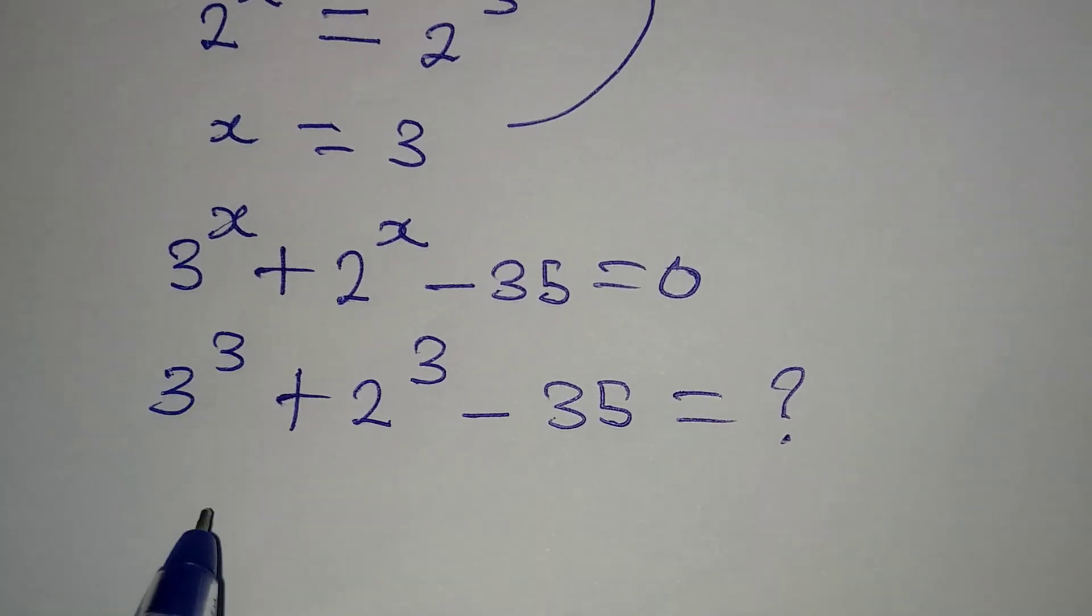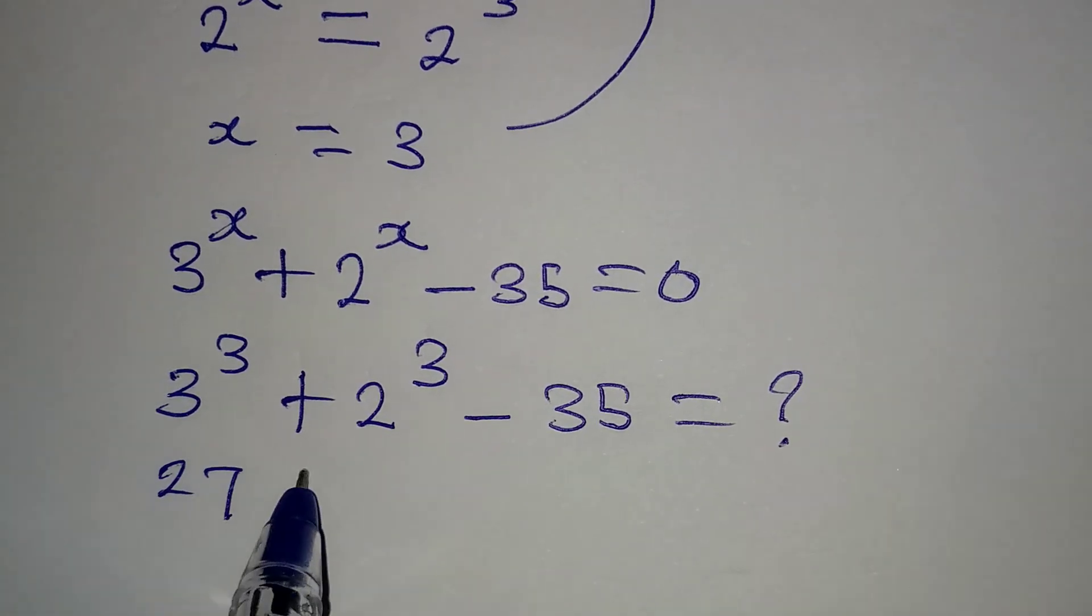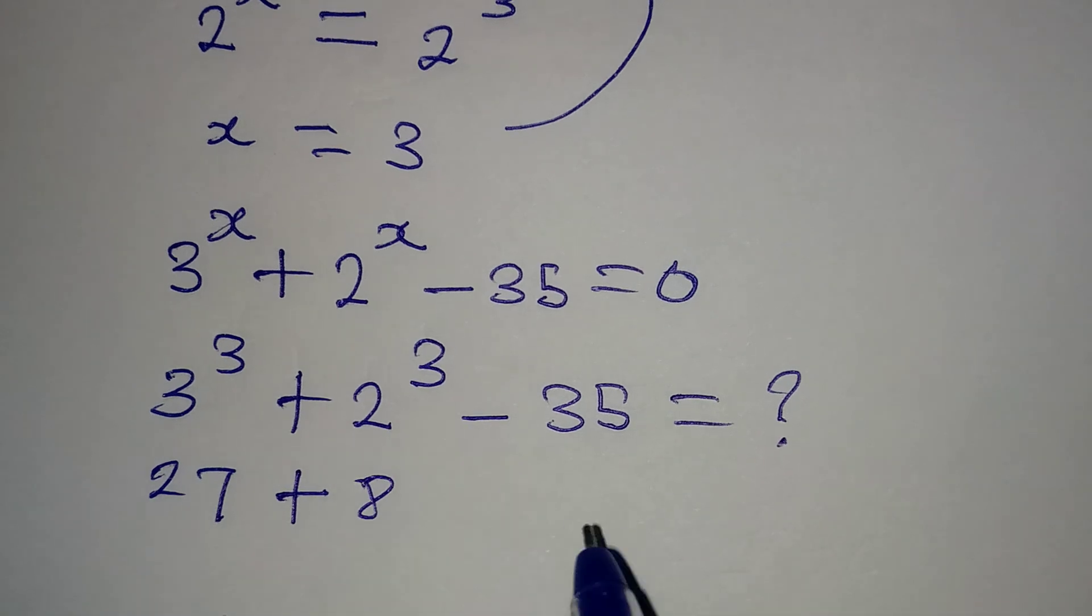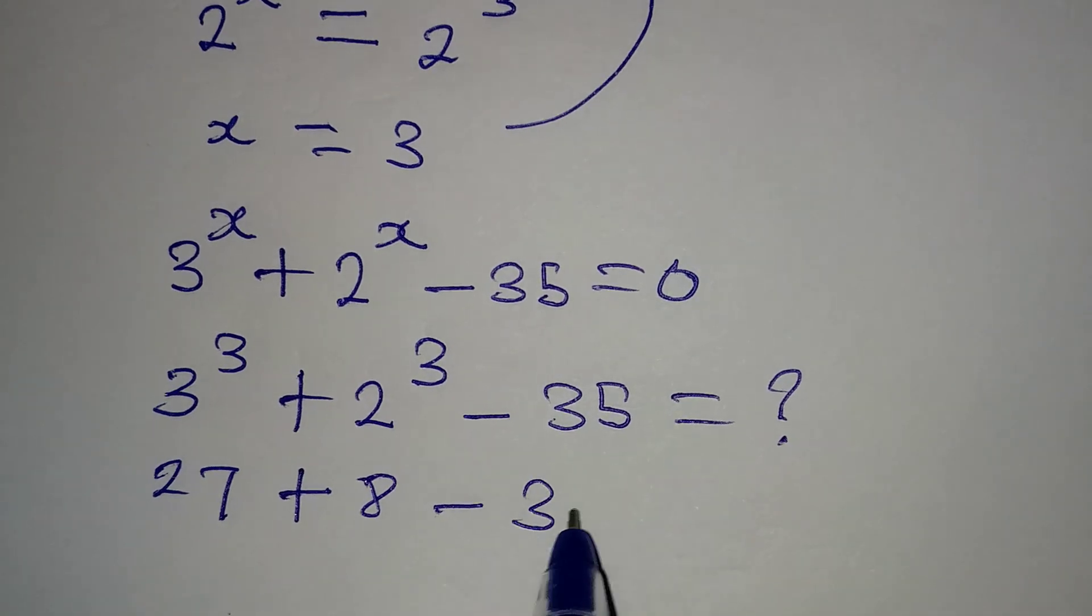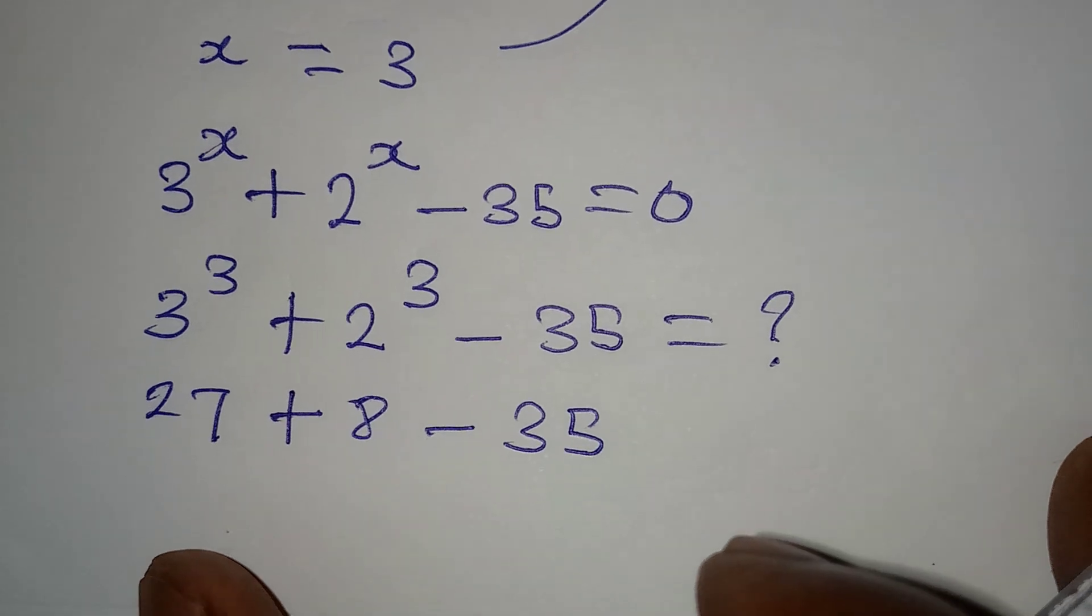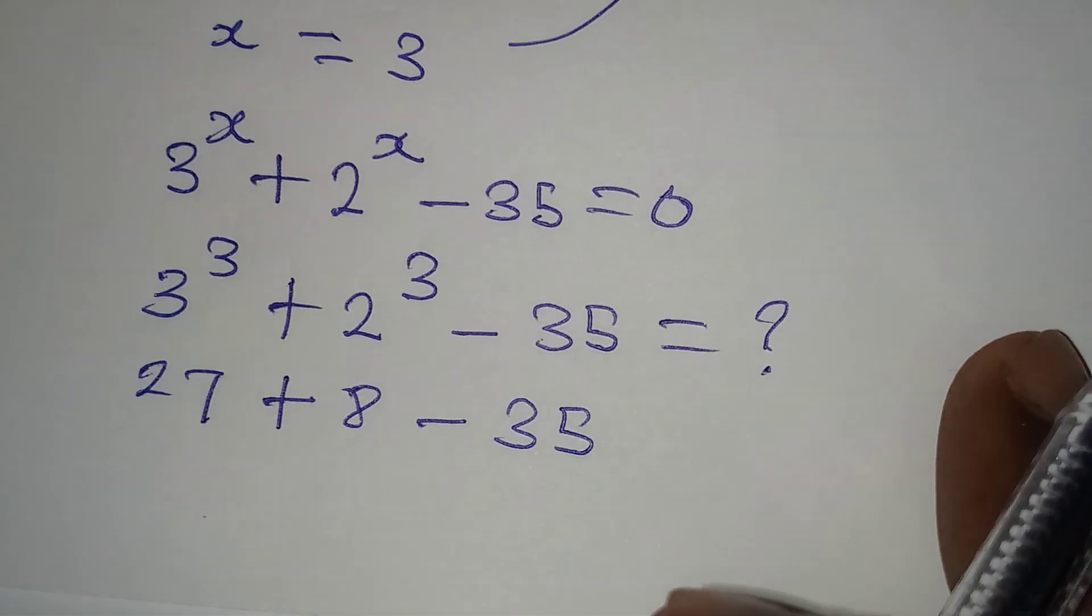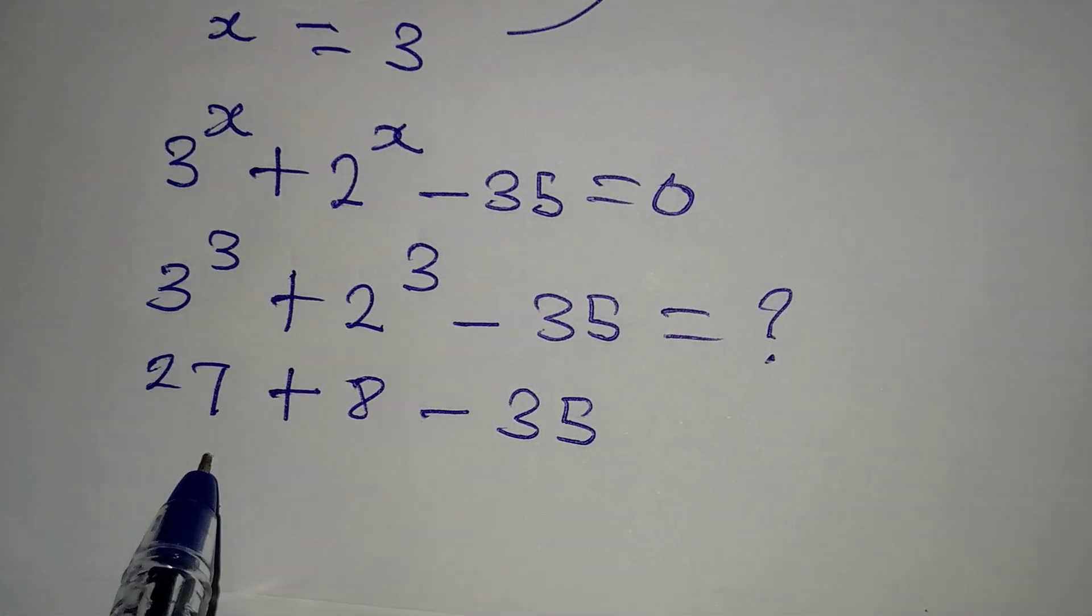Now, 3^3 is 27, and 2^3 is 8, then we have minus 35. Don't forget that 27 + 8 is still 35. So we have...